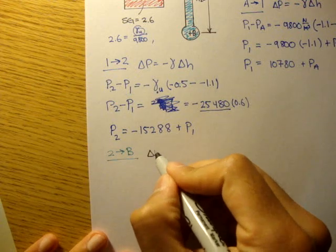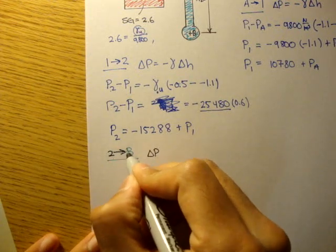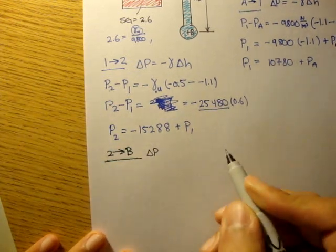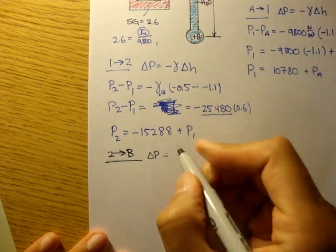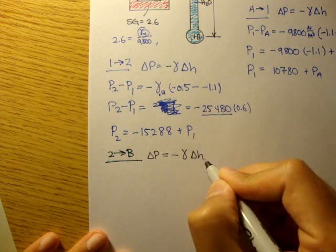Our equation, let me rewrite this, is delta P equals negative gamma delta H.